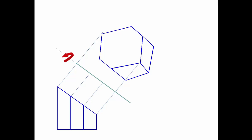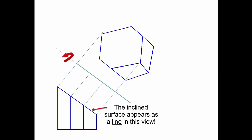In this example, we have projected the auxiliary view off of the front view because the inclined plane appears as a line in the front view. This is an important point regarding auxiliary views drawn for the purpose of showing an inclined surface in true size and shape. The drafter will start with a view in which the inclined surface appears as a line, because the inclined surface is perpendicular to that view.